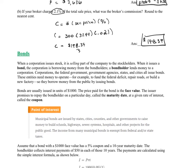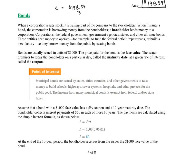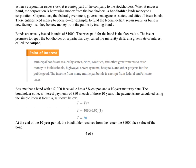So it says here, assume that a bond with $1,000 face value has a 5% coupon and a 10-year maturity date. So what are we going to use? Well...